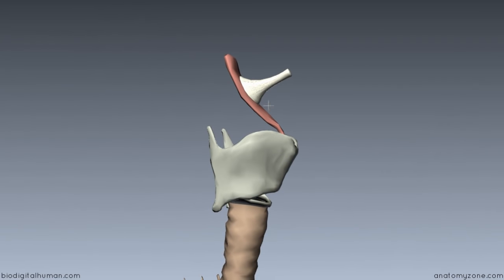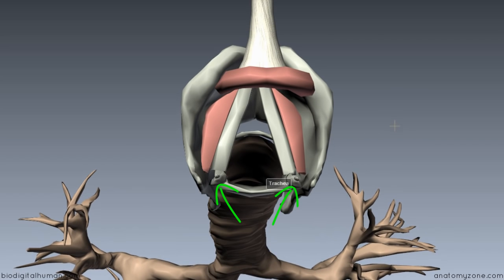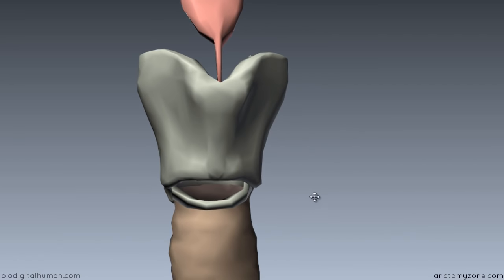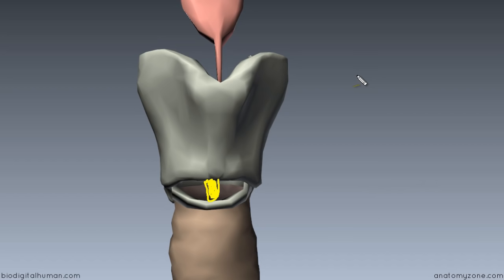With the thyroid cartilage brought back and rotating to a superior view, you can see the arytenoid cartilages posteriorly and the vocal ligament attaching from the vocal process to just inside the thyroid cartilage. Two last points regarding the cricothyroid membrane: in the midline it's thickened to form the median cricothyroid ligament, and the lateral parts of the cricothyroid membrane are referred to as the conus elasticus. These lie close under the mucous membranes and extend from the superior border of the cricoid to the inferior margin of the vocal ligaments — the upper margin of the cricothyroid membrane.